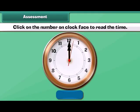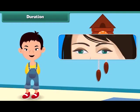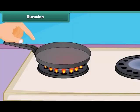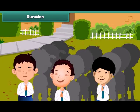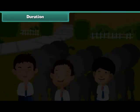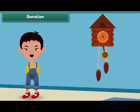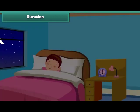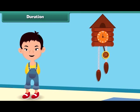Click on the number on the clock face to read the time. Can you tell me how much time we take to blink our eyes? Yes, it takes only a few seconds. Similarly, when we touch a hot object, we take our hand back in a few seconds. But when we go for a morning prayer in school, it takes a couple of minutes rather than a few seconds. Similarly, it takes an hour to go to sleep at night. So we can say that some activities in our daily life take more time than others.